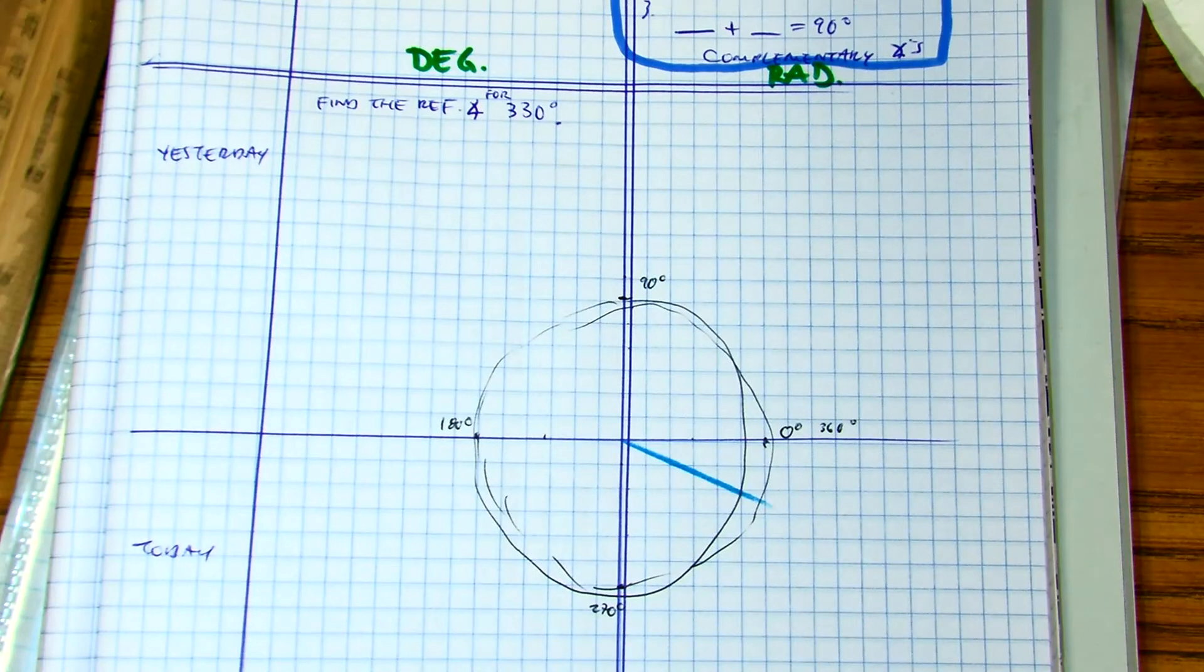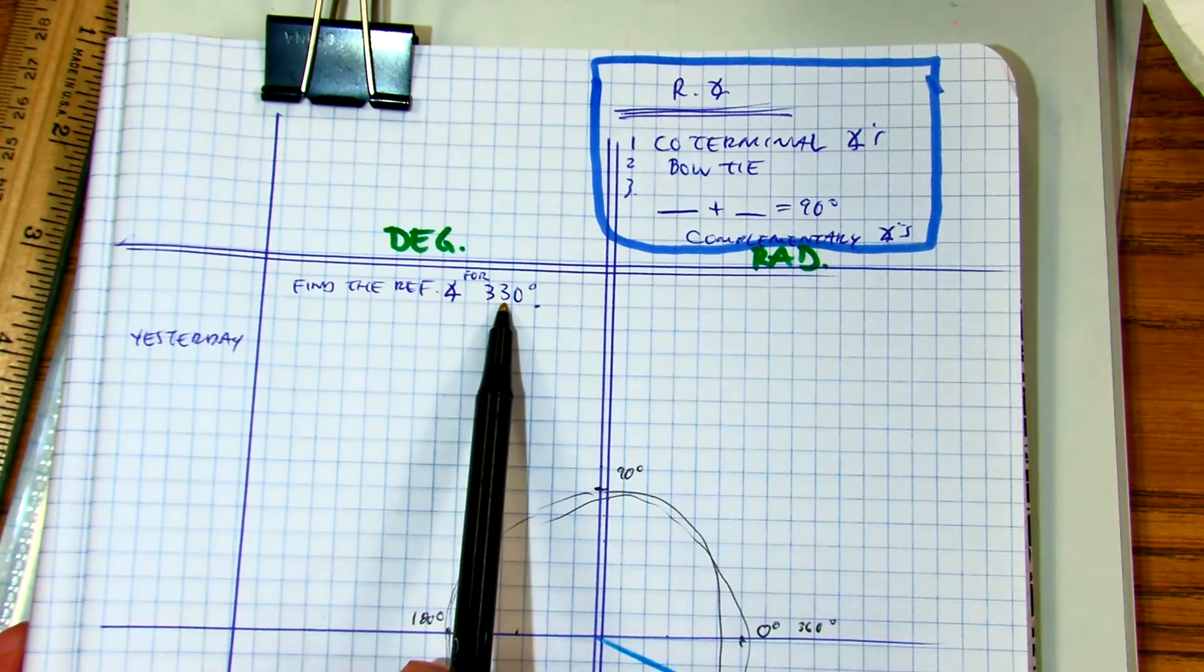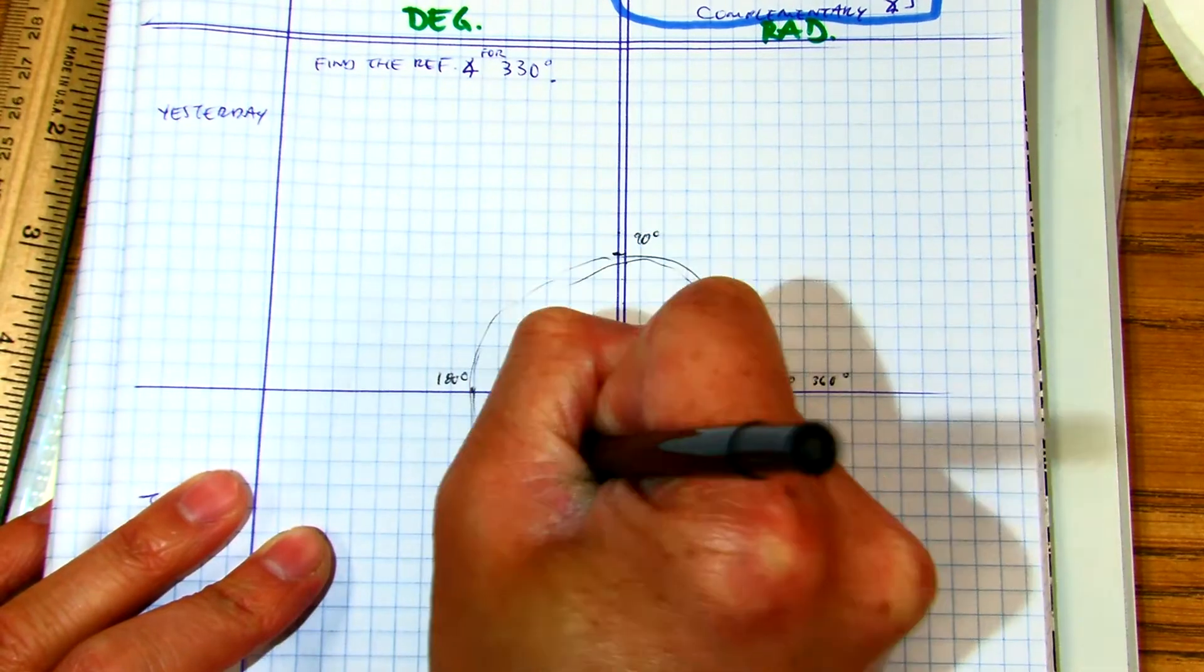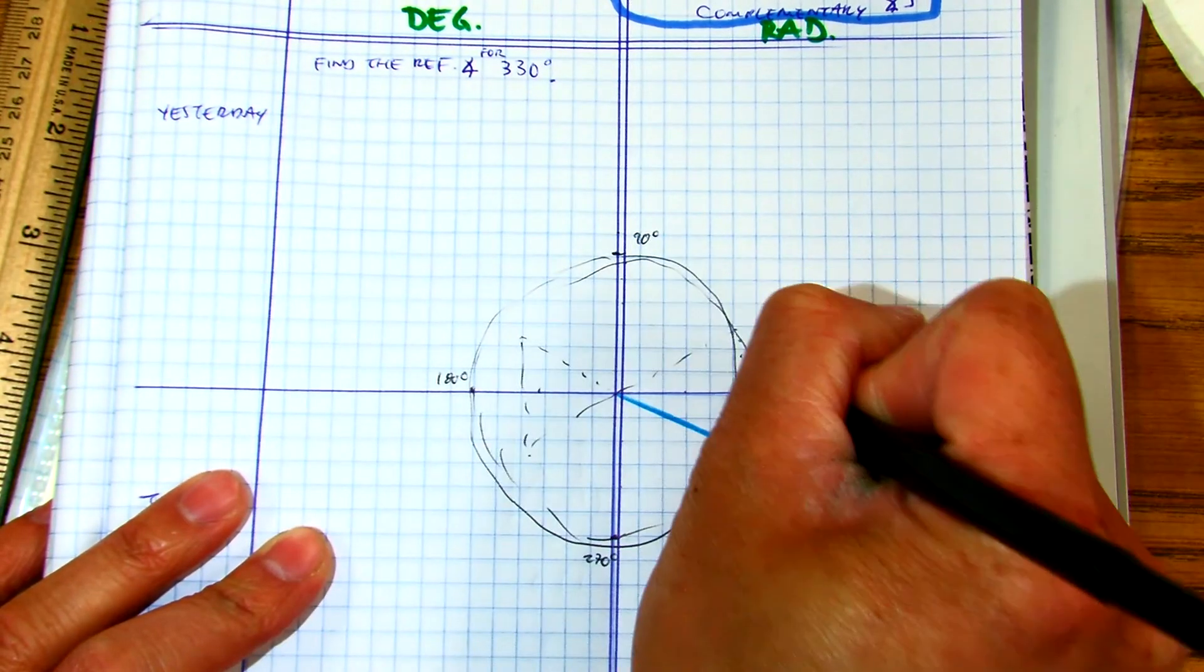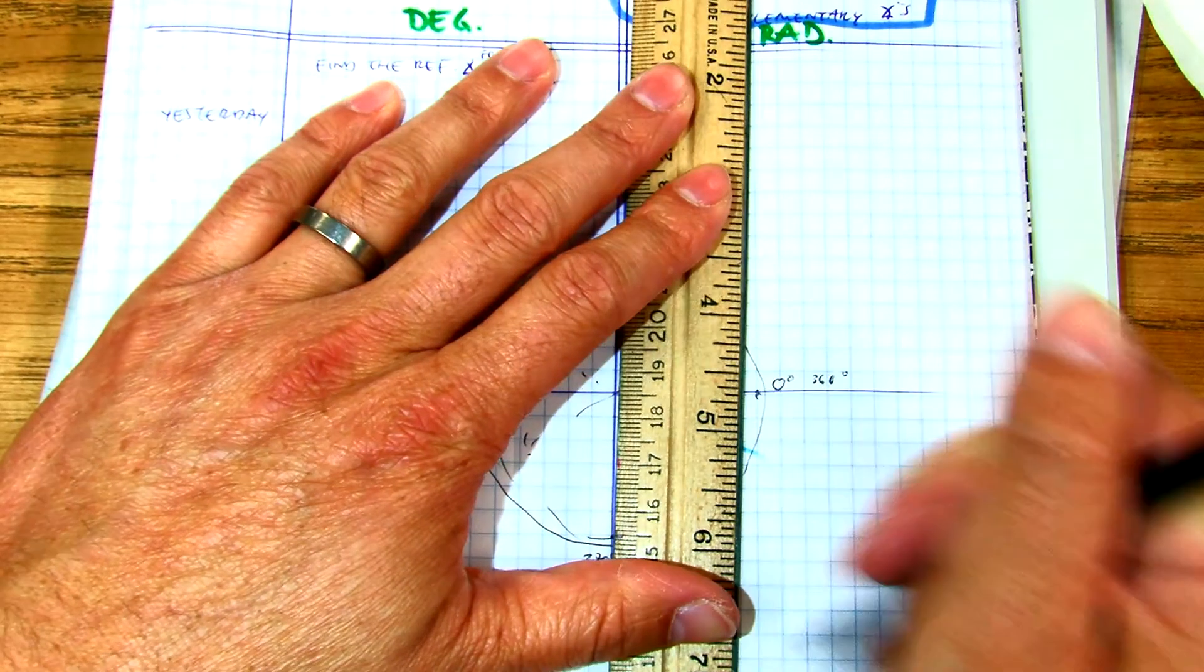Now, I don't have to find coterminal angles because this number is between 0 and 360. I'm going to draw my bow tie, and that helps you understand that I'm drawing my triangle from the x-axis.